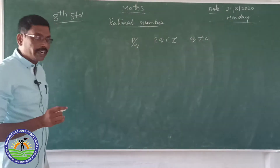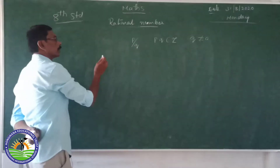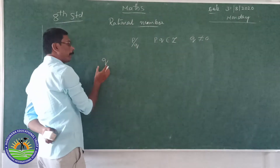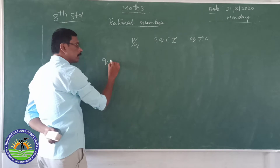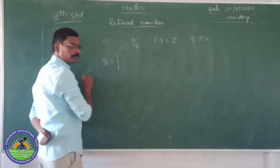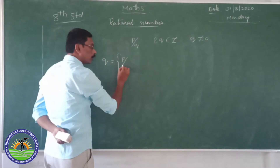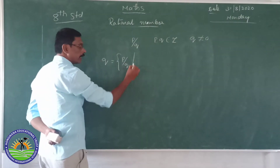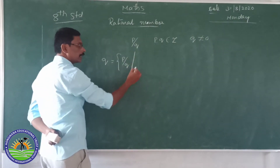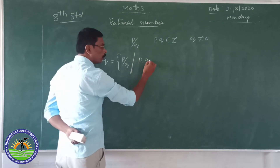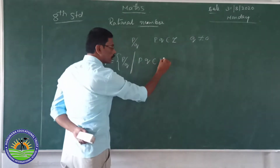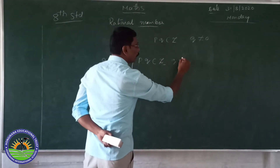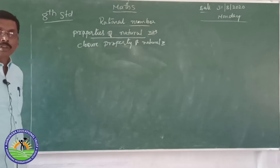In mathematical form, the set of rational numbers is represented by the letter Q and is defined as: Q equals the set of P by Q, such that P comma Q belongs to Z and Q does not equal 0.